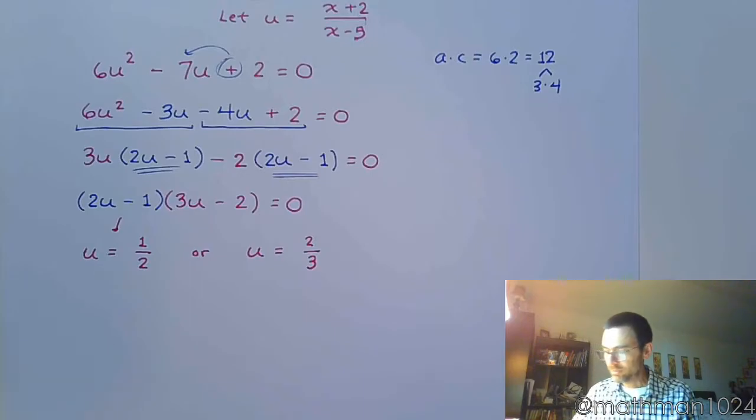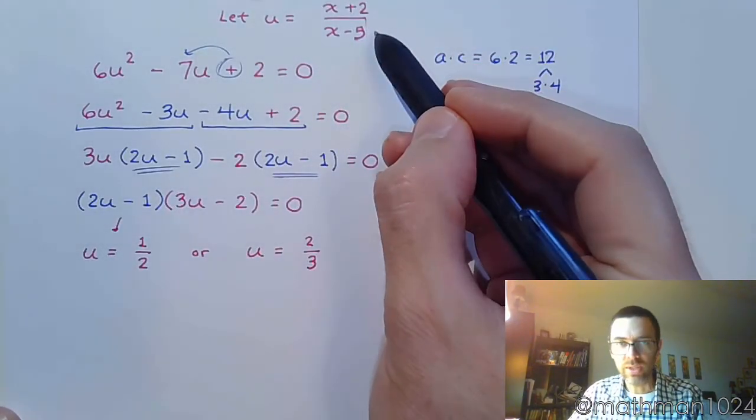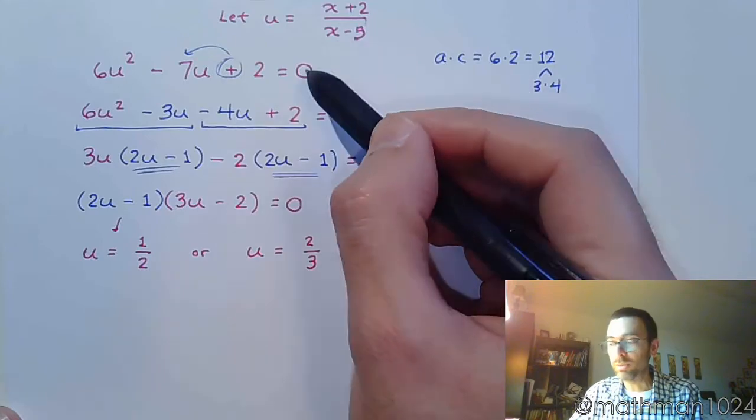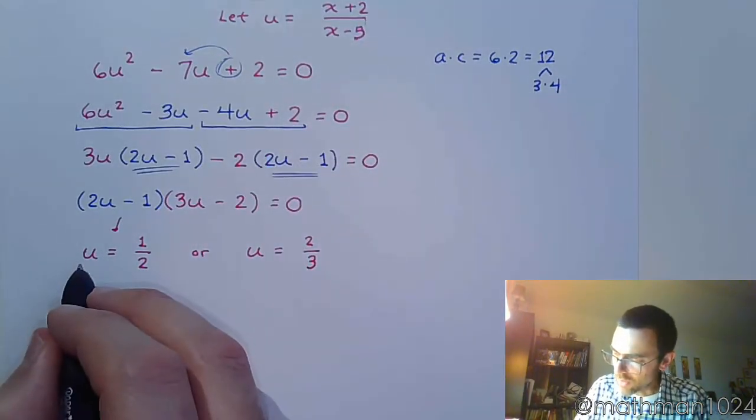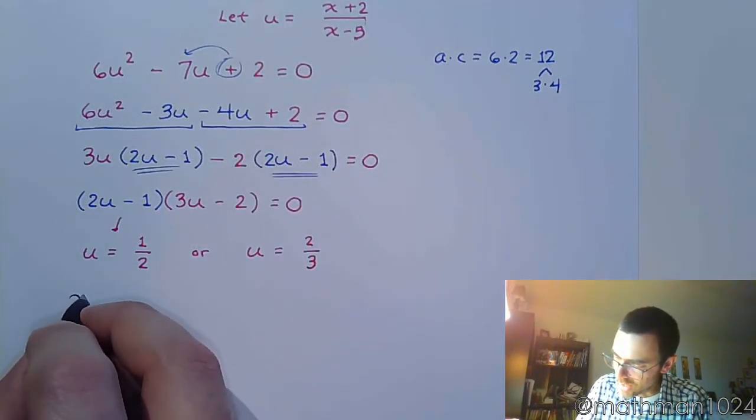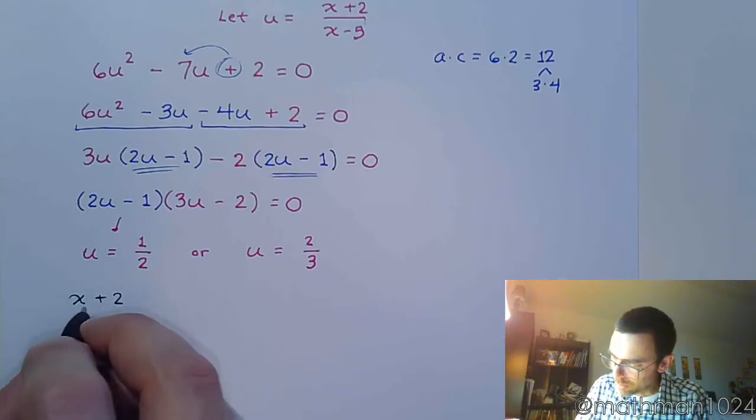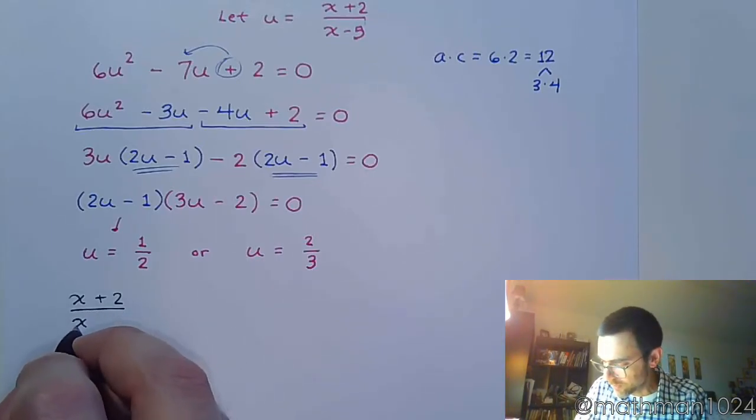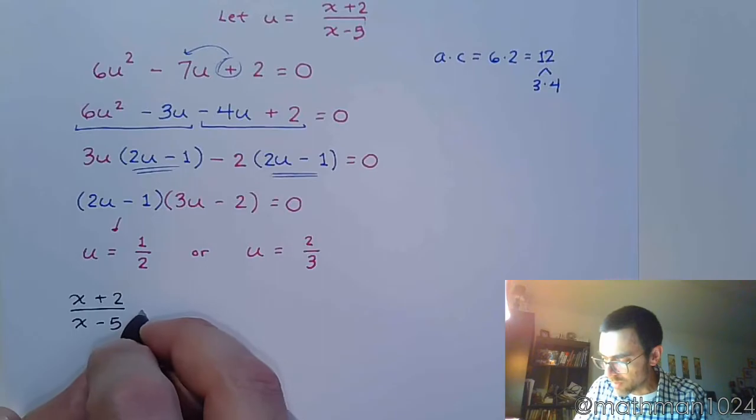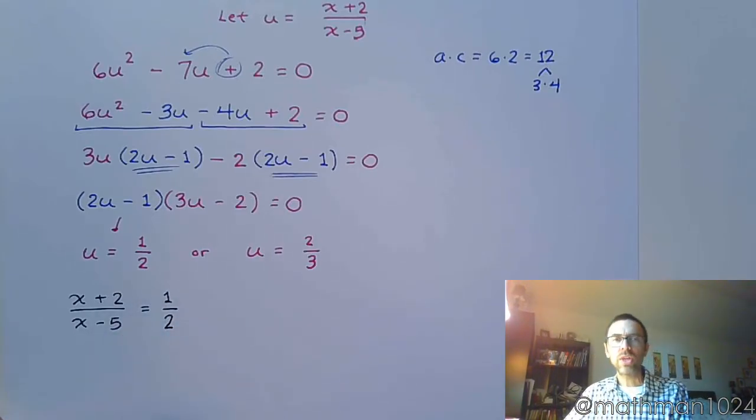Alright. But don't forget what u was the placeholder for. We were using u instead of this guy to make things simpler, right? So I'm going to rewrite this. Instead of u, I'm going to say this is x plus 2 over x minus 5, and this is equal to 1 half. So now that we're going back to our original expression in terms of x, I'm going back to writing in terms of black.